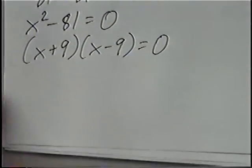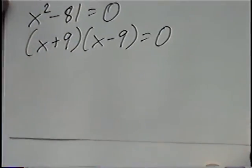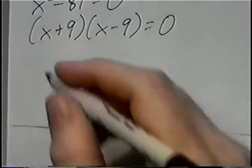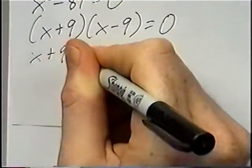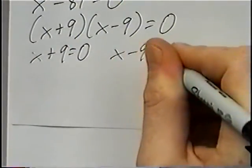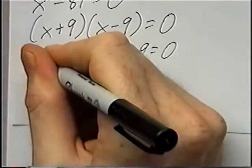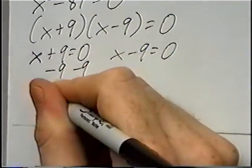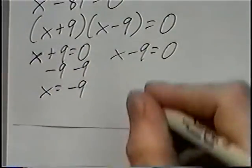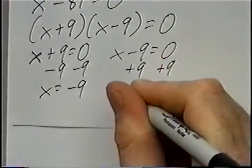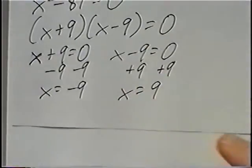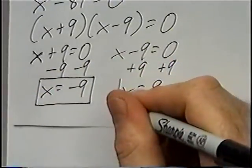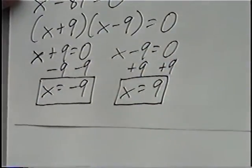Solving from here, we take each parenthesis and set it equal to 0, since one or both of these parentheses must equal 0. So x plus 9 equals 0 and x minus 9 equals 0. Subtracting 9 from the first equation gives x equals negative 9, and adding 9 to the second gives x equals positive 9. Our two answers are x equals 9 and x equals negative 9.